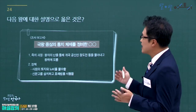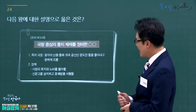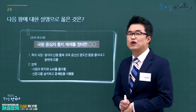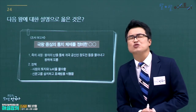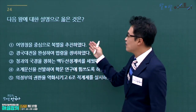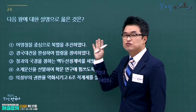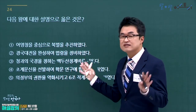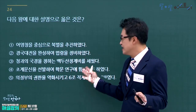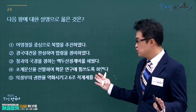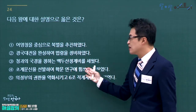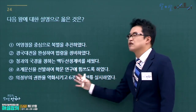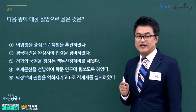왕자의 난을 통해 정도전을 몰아내고 왕위에 오른 사람은 태종 이방원입니다. 태종에 대한 설명을 고릅니다. 어영청 중심 북벌 추진은 효종, 경국대전 완성은 성종, 백두산 정계비는 숙종, 초계문신 제도는 정조입니다. 의정부 권한을 약화시키고 6조 직계제를 실시한 것이 태종이므로 정답은 5번입니다.